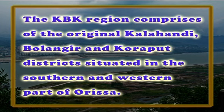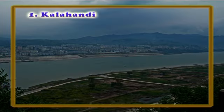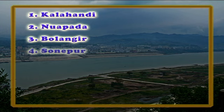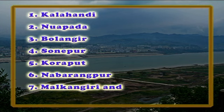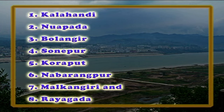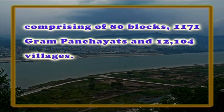Next are KBK districts. The KBK region comprises the original Kalahandi, Bolangir and Koraput districts situated in the southern and western part of Odisha. These three districts have been reorganized since 1992-93 into eight districts, namely Kalahandi, Nuapada, Bolangir, Sonepur, Koraput, Nabarangpur, Malkangiri and Rayagada.